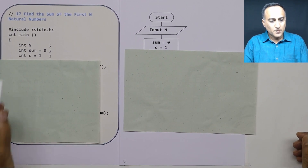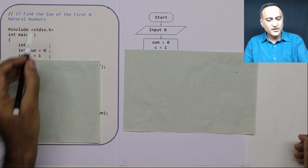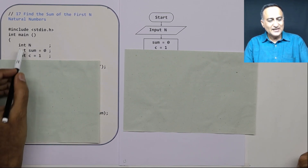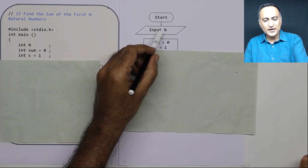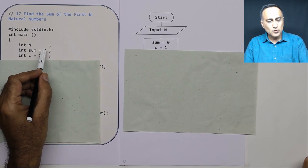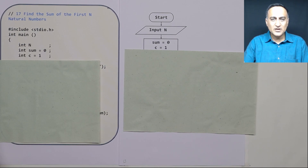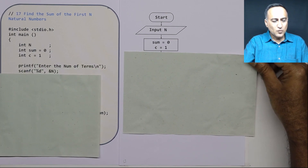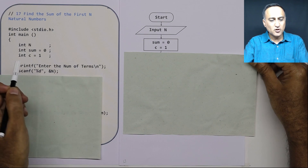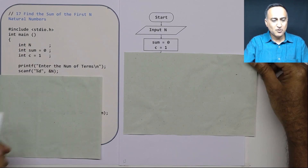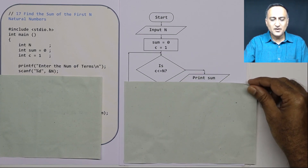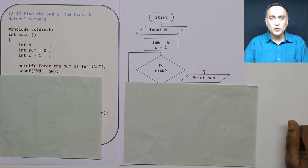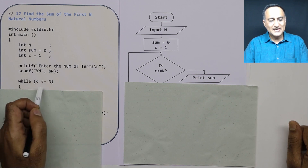This flowchart is trying to find the sum of the first n natural numbers. Suppose n is 5; I should do 1 + 2 + 3 + 4 + 5. I need the endpoint n, so I ask the user to enter the value of n. I initialize sum to zero because every time I'm going to add 1 to sum, 2 to sum, 3 to sum, starting from the first natural number 1. As long as c is less than or equal to n, I keep a while loop.